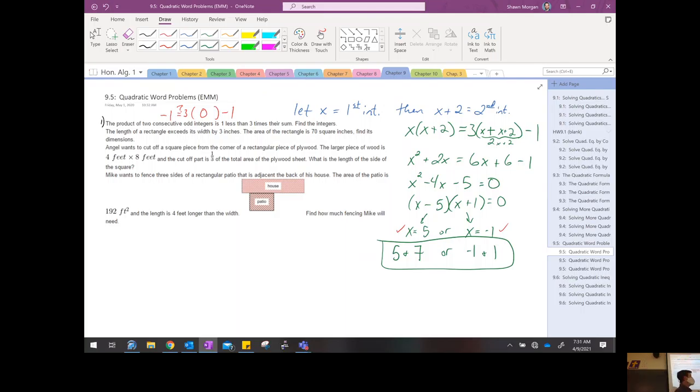Okay? So, like, let's say, for example, that I threw in an extra stipulation on number one. Instead of saying the product of two consecutive odd integers, I said the product of two consecutive positive odd integers. Then I throw this out as an extraneous solution because negative one isn't positive. All right? You guys see what I mean by that?